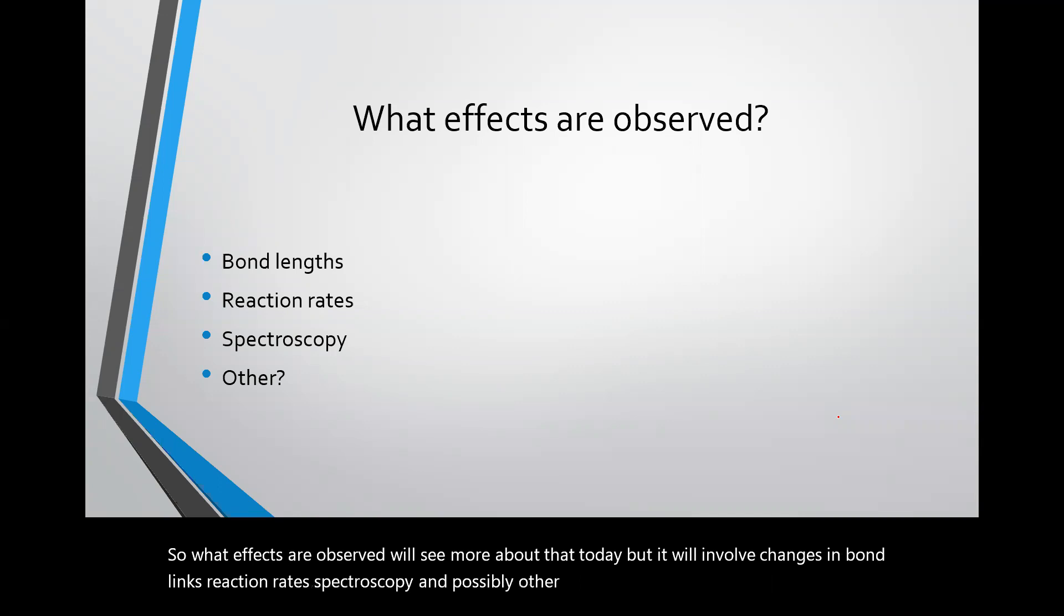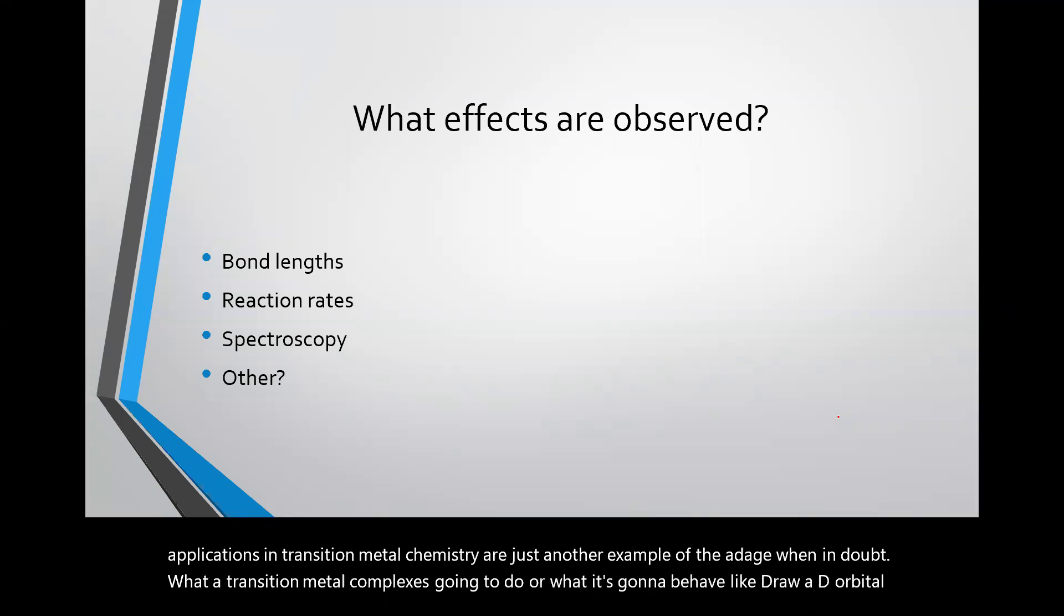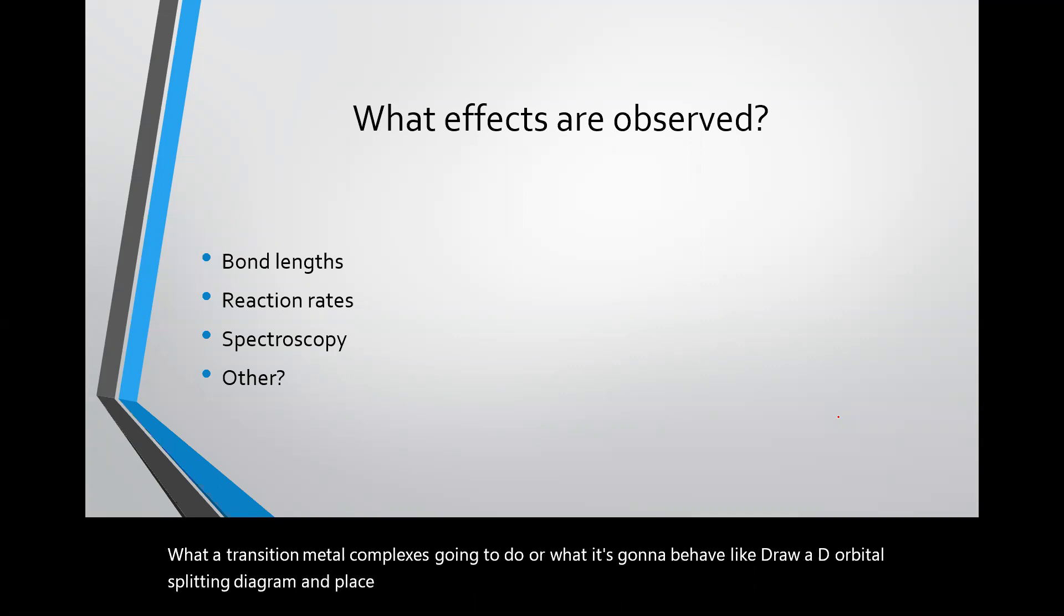So the Jahn-Teller theory and its applications in transition metal chemistry are just another example of the adage: When in doubt of what a transition metal complex is going to do, or what it's going to behave like, draw a d-orbital splitting diagram and place the electrons properly within it. Often, analysis of this diagram will help us understand what the complex is going to do.